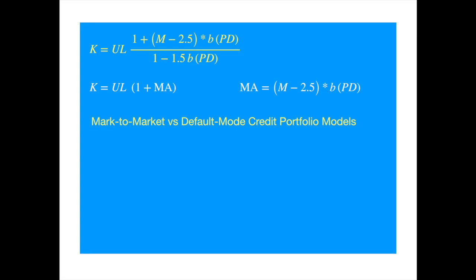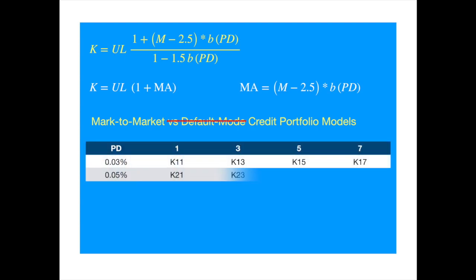Basel initially tried both approaches, but the results were different. So the default mode approach was subsequently discarded, though it would have certainly influenced the proposal implicitly. So the Basel Committee ran these mark-to-market models for different levels of probabilities of default, across maturities, and produced a matrix of unexpected losses.